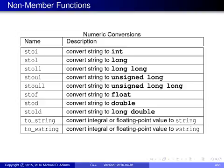There are also non-member functions for numeric conversion. For example, stoi() converts a string to an int; stol() to a long; stoll() to a long long; stoul() to an unsigned long; stoull() to an unsigned long long; stof() to a float; stod() to a double; and stold() to a long double. The functions to_string() and to_wstring() convert from an integral or floating-point value to a string or wide string respectively.